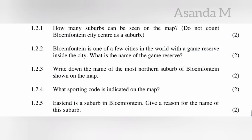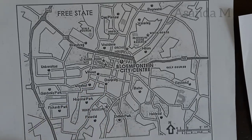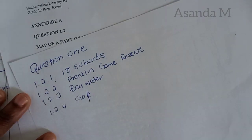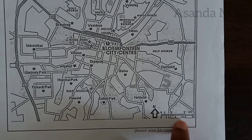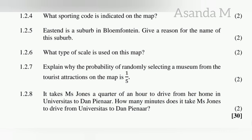The next question asks: what sporting code is indicated on the map? The names of sports are used as the code. Looking at the map, it shows a golf course, and there's no other sport indicated, so the only sporting code included is golf. Question 1.2.6 asks what type of scale is used on this map - very simple: it is a line scale or a bar scale; you can use whichever you prefer.